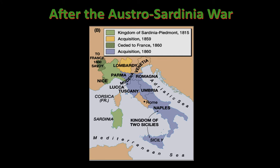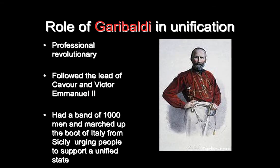This map shows Lombardy — colored gold — joining with Sardinia Piedmont. To get the purple states to join the following year, in comes Giuseppe Garibaldi. Notice his sharp red shirt — he leads a band of red shirts and is literally a professional revolutionary. There was a bounty on his head in the 1830s and he fled Italy to South America, where revolutions were also taking place. Garibaldi comes back when he hears about the nationalism movement, willing to follow Cavour and Victor Emmanuel. With a band of about a thousand red shirts, he marches up the boot of Italy, invading Sicily and persuading the people to join the leadership of Cavour and Victor Emmanuel.